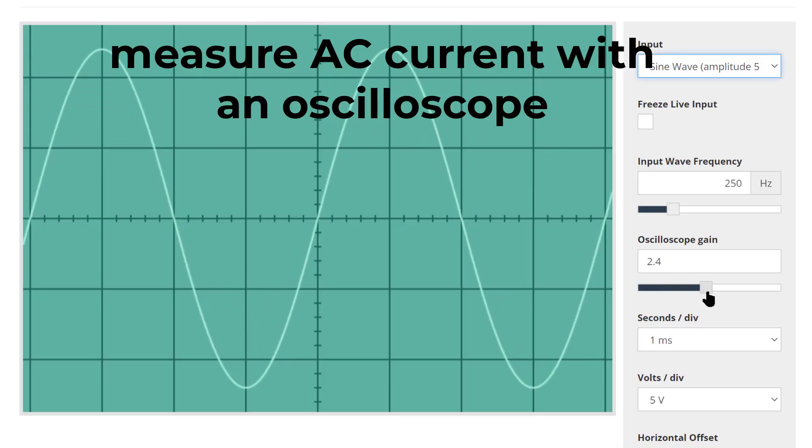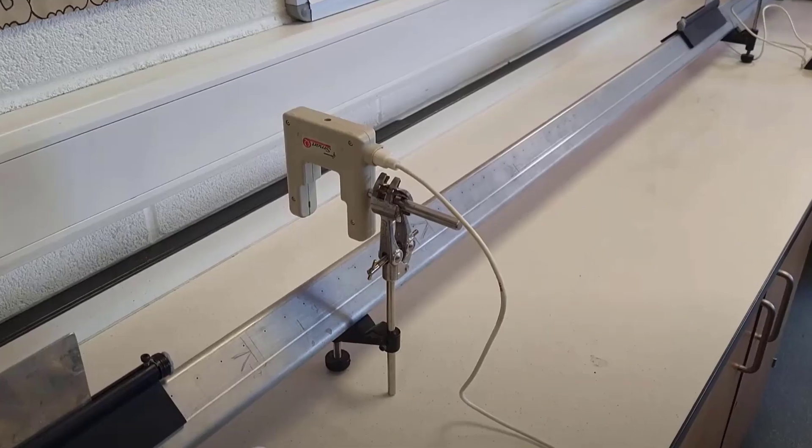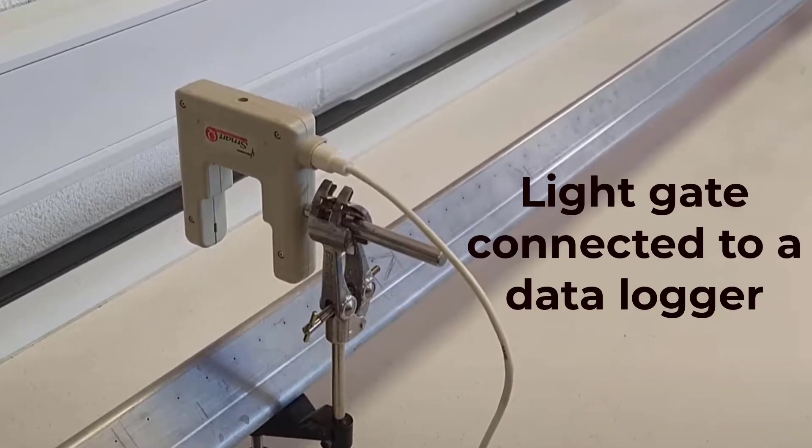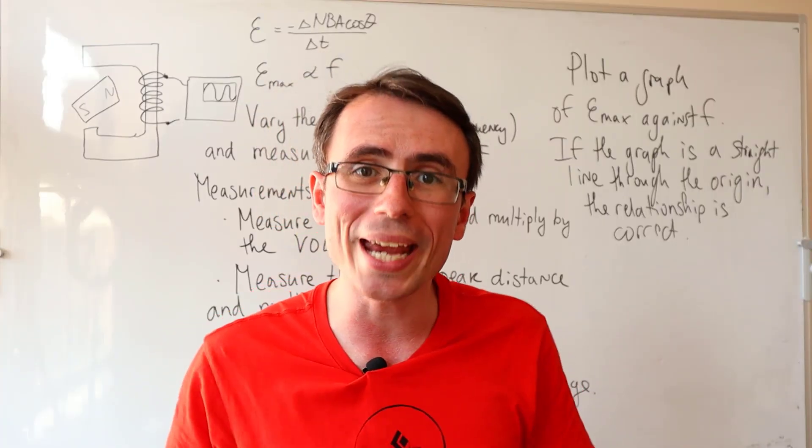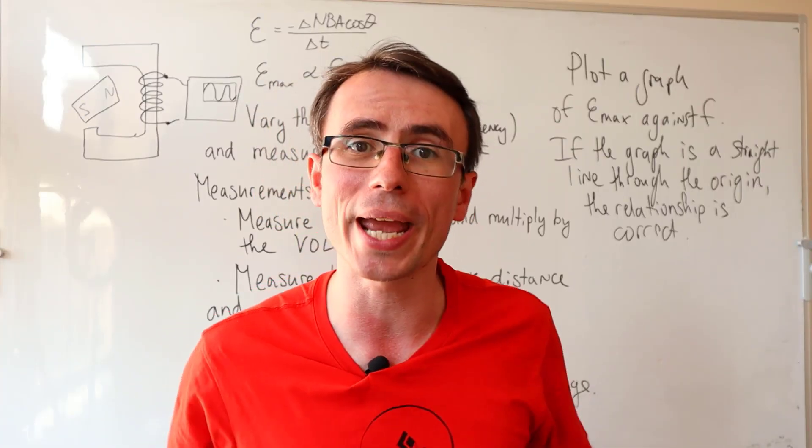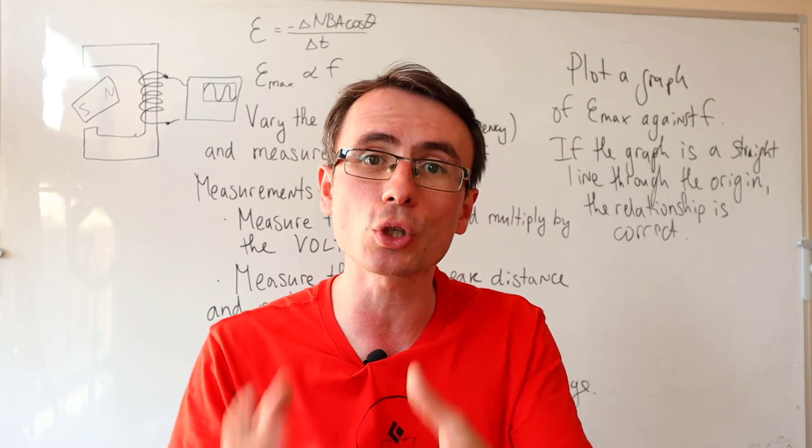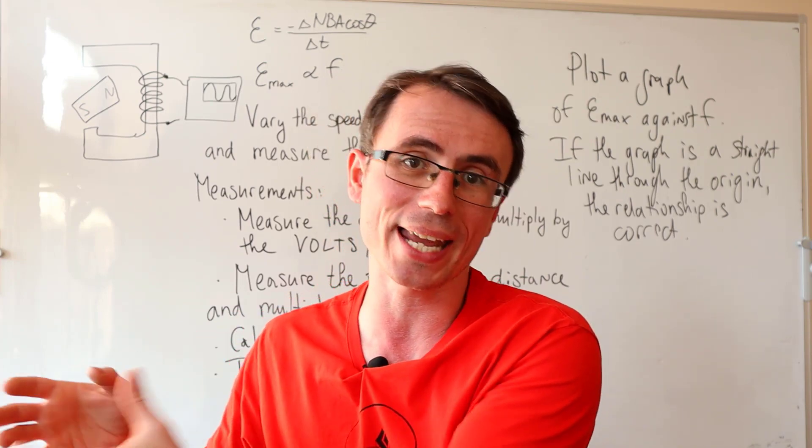Measure AC current with an oscilloscope. You would measure speed with a light gate connected to a data logger. Also, you can measure the count rate of a radioactive object with a GM tube connected to a data logger.